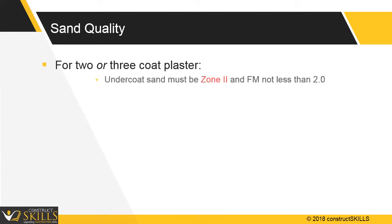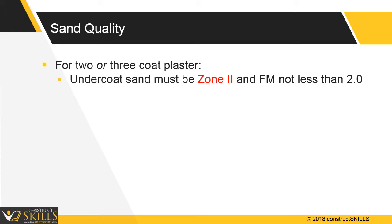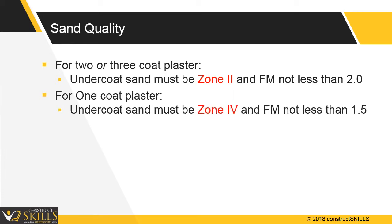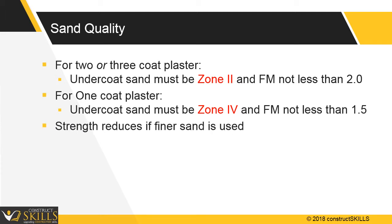Where two or three coat plasters are adopted, the mix for the undercoats should contain coarse sand conforming to grading zone 2 of IS 383:1970, having a fineness modulus not less than 2.0. For single coat plaster, the fineness modulus of sand should be 1.5, conforming to grading zone 4 of IS 383:1970. Where only fine sand is available, the fineness modulus may be improved by mixing the required percentage of coarse sand, as the strength of plaster mix gets reduced with reduction in fineness modulus.